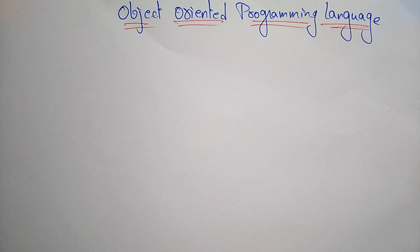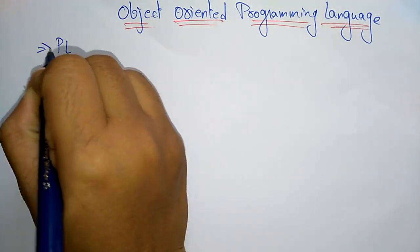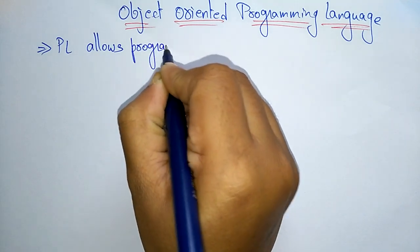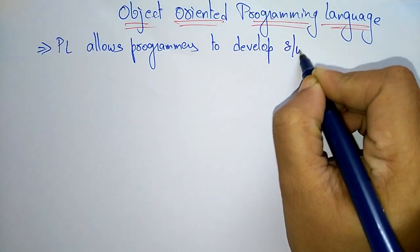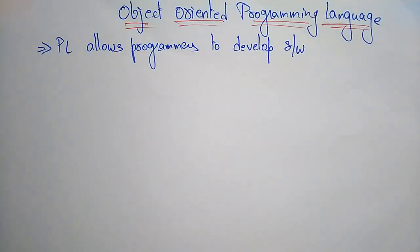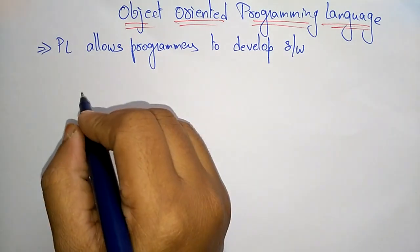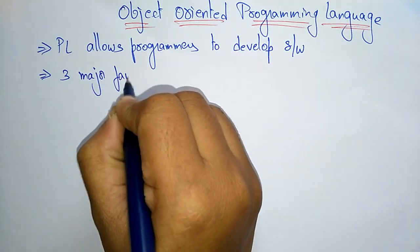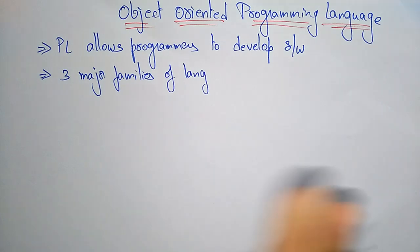Programming language allows programmers to mainly develop software. Based on your requirement you can select different types of programming languages. There are mainly three major families in programming languages.